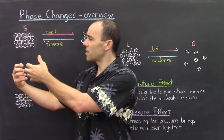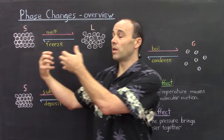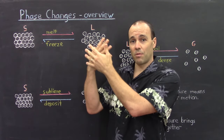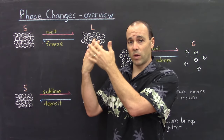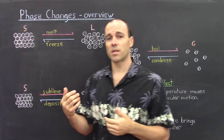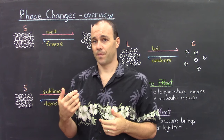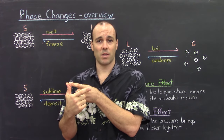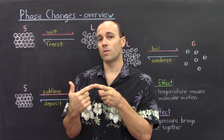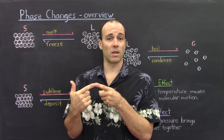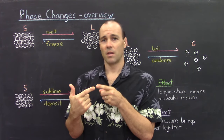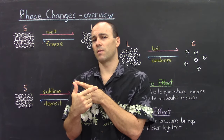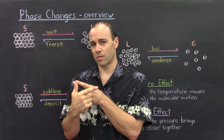Now, to convert a solid into a liquid, where the particles have the freedom to slide around past one another, one of two things can be done. One, the temperature can be increased, and two, the pressure can be varied. We've discussed the temperature effects a little more, so let's recall those.